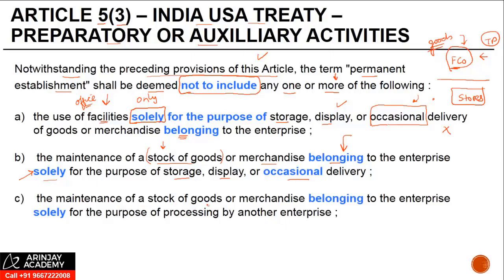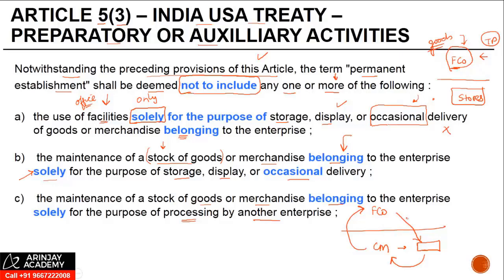The maintenance of a stock of goods or merchandise belonging to the enterprise solely for the purpose of processing by another enterprise. So if there is a foreign company and there is a contract manufacturer in India, if the goods are stored here for the purpose of processing by this company and after processing they go to the foreign company, then such storage of goods — the maintenance of stock of goods or merchandise belonging to the enterprise — will not result in a PE.